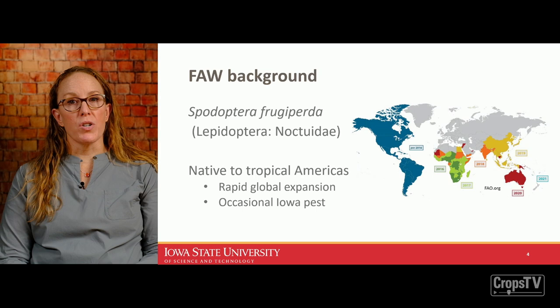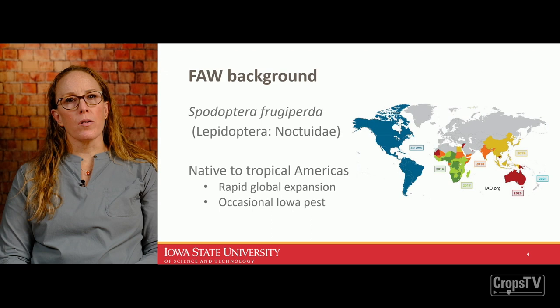Fall armyworms have been around for a long time, but we would generally consider them a tropical pest, native to the tropical Americas. However, in the last five years, they've had a rapid global expansion to Australia, southern Asia, and almost all over Africa.